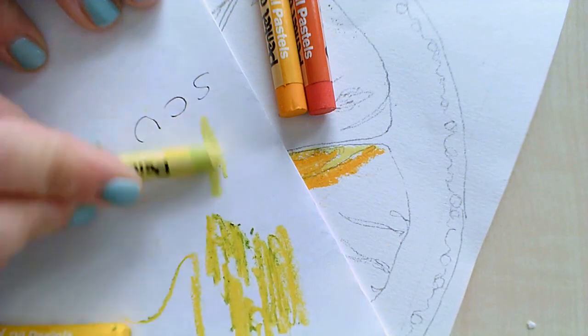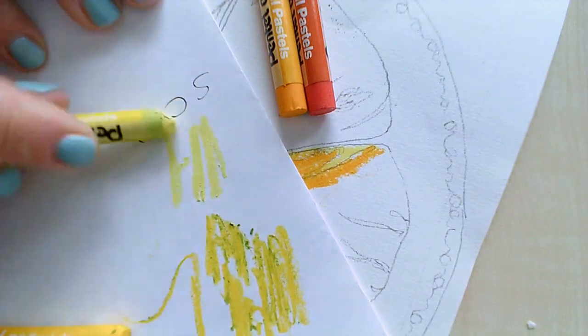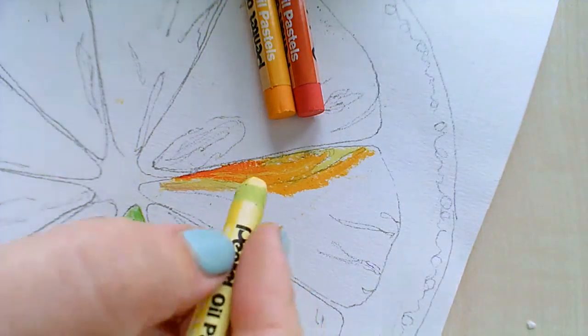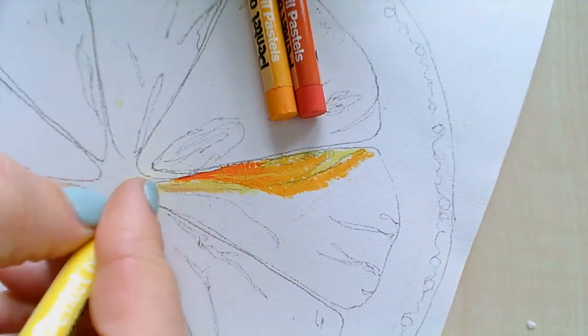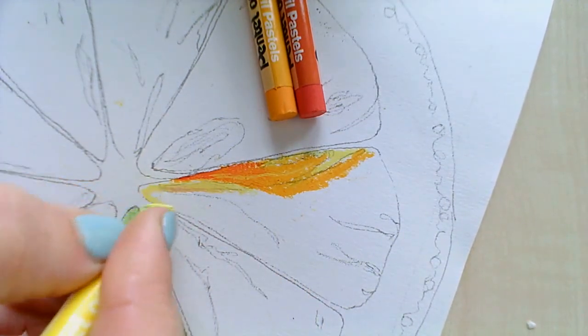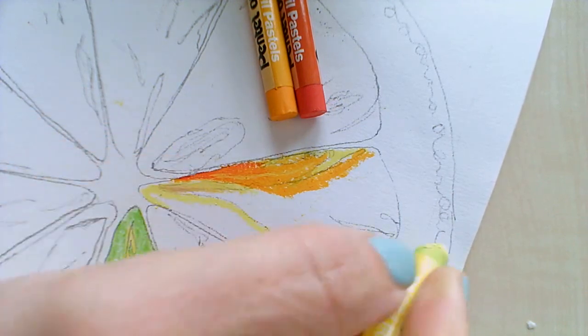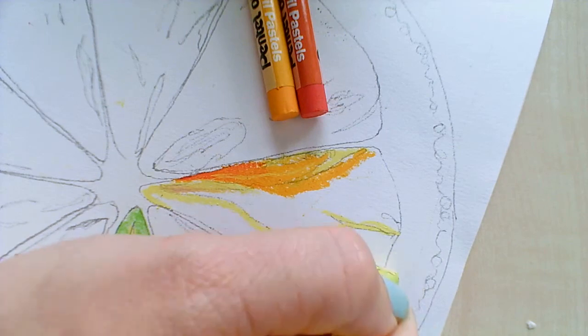We're going to start with our lightest color, and we're putting our lightest color on first just like you did with your other media. We're going to start with those veins on the oil pastel area.